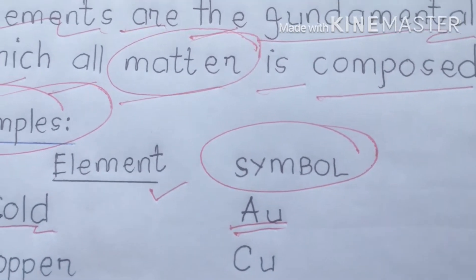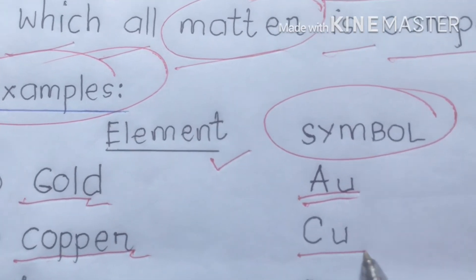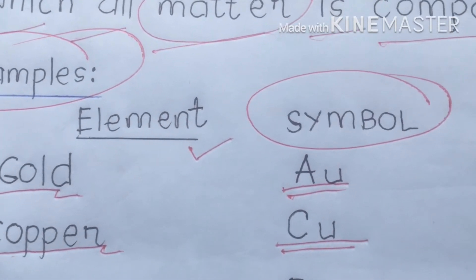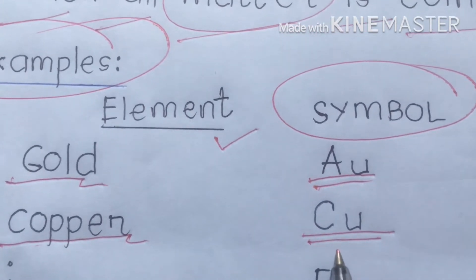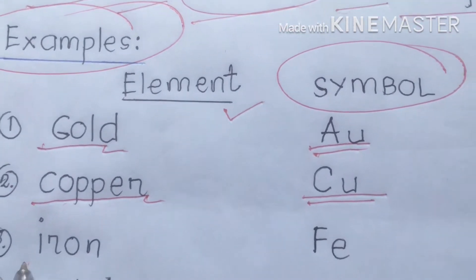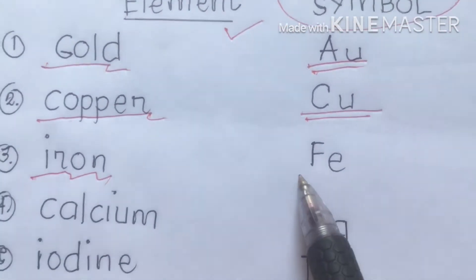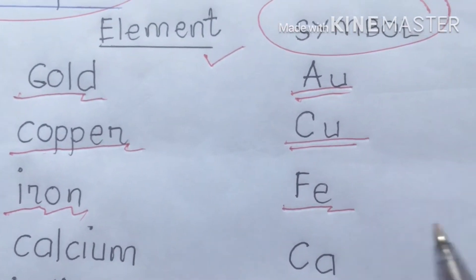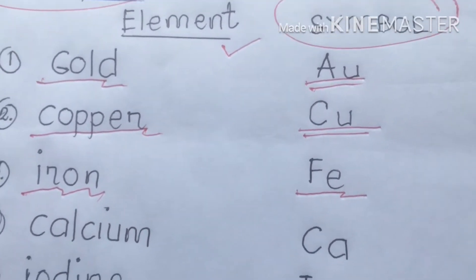The second element is copper. The symbol is Cu — that's uppercase C and lowercase u. That's the symbol of copper. Next is iron. Iron class is uppercase F and lowercase e, written as Fe. That's the symbol for iron.